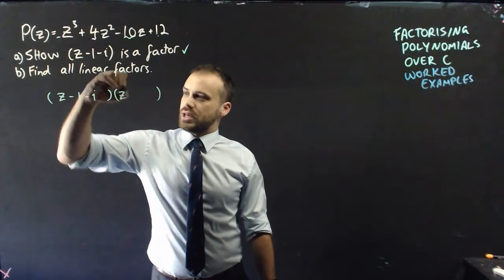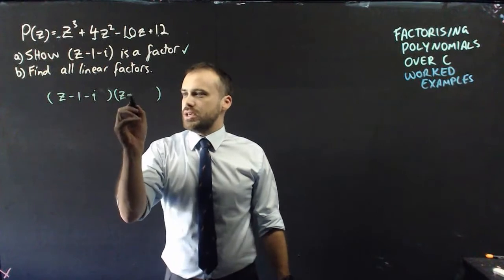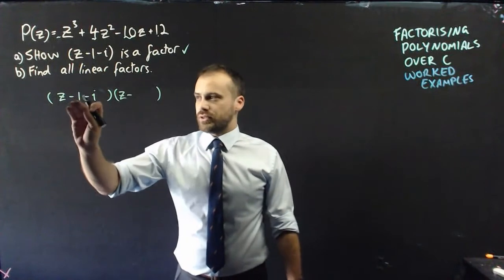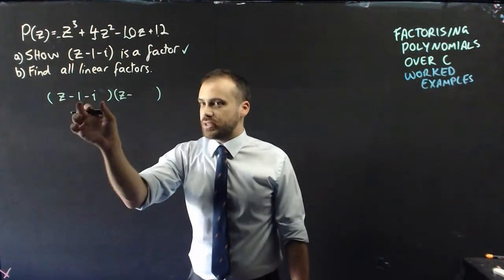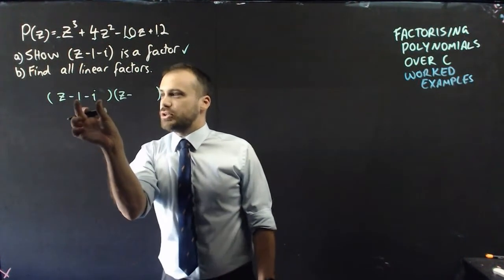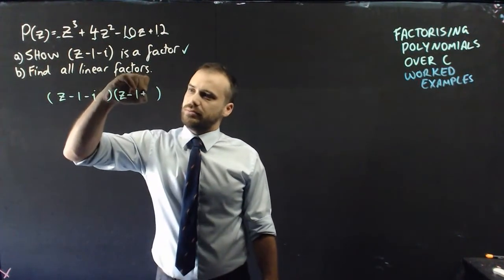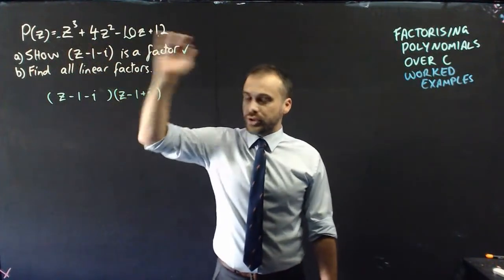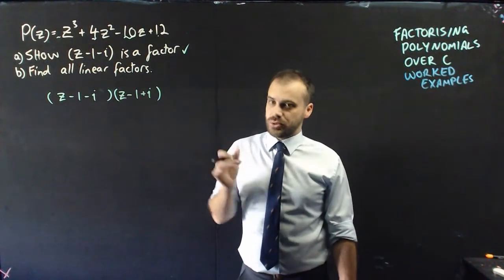It's going to be z. Now, we still use a minus here. Don't get weird with your pluses and minuses. The minus here is for saying that z minus this factor, z minus this other factor, and the factor is going to be the conjugate of that factor, 1 plus i. Conjugate root theorem, if you have real coefficients, you're going to get two of those.